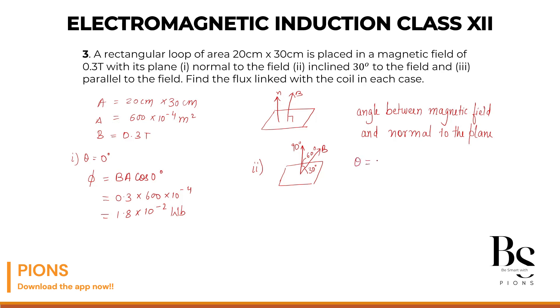So in this second case, what will be our theta? 30 degree. No. 60 degree. So what will be the flux? Flux phi equal to B, which is 0.3, into area 600 into 10 to the power minus 4, into cos of 60 degree.